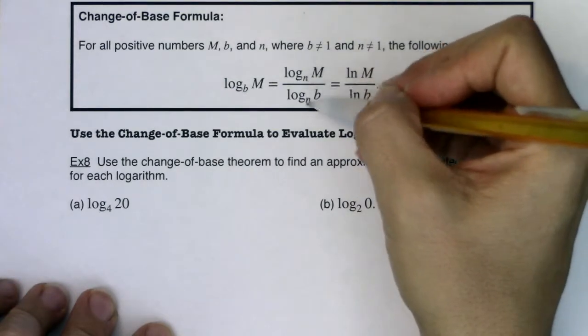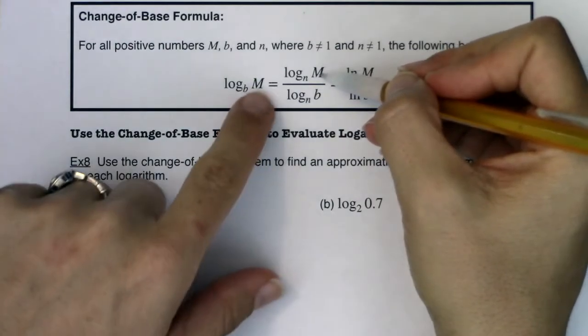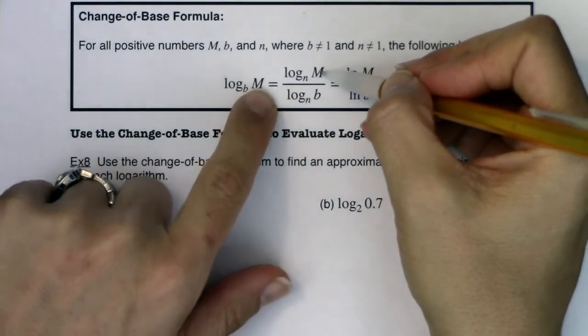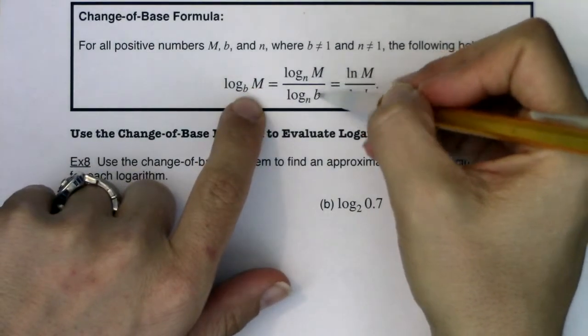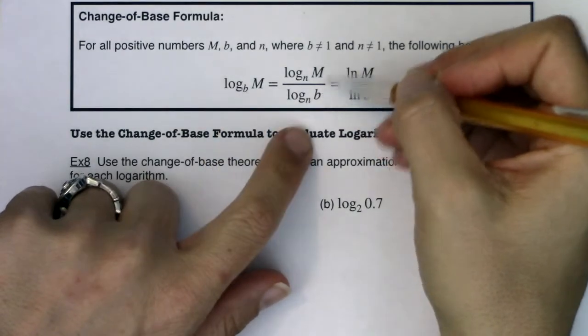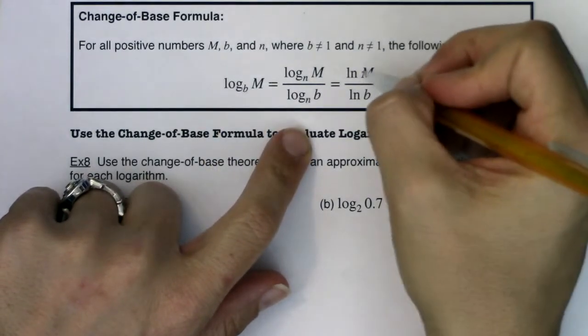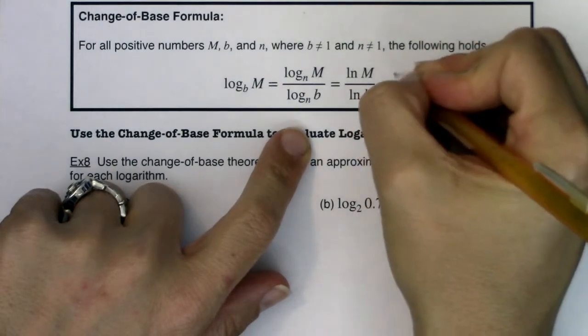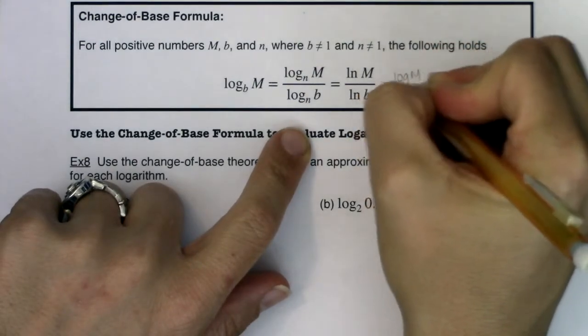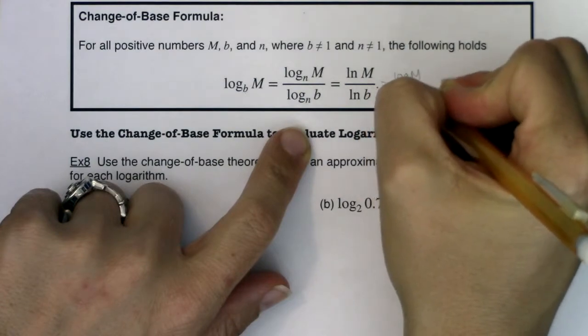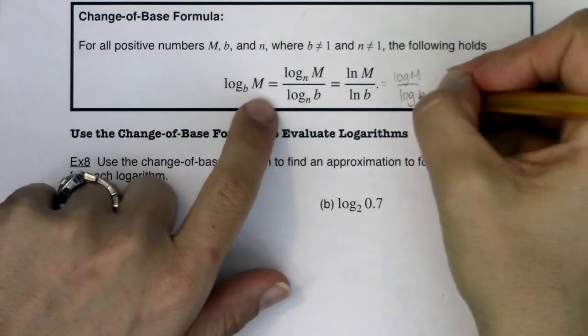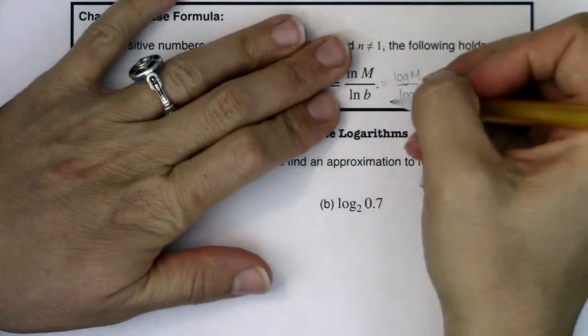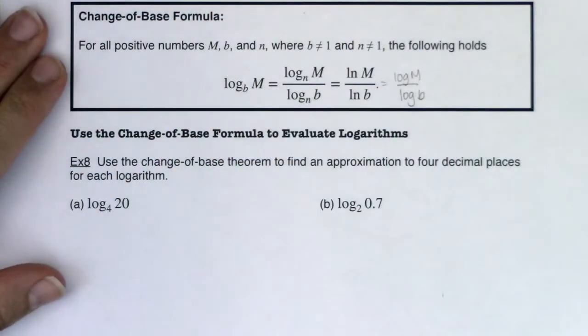So you can change this to any base you want as long as you have your original argument and your original base as the argument of your new logarithms. But we do have buttons for ln on our calculator, and I could also write this as a common log. So log of the argument over log of the base, and I have these two buttons on my calculator so I can make it work.